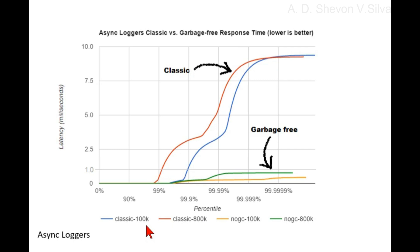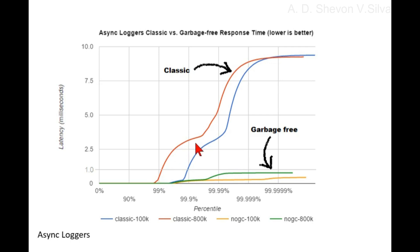In the graph, 100k means logging at a sustained load of 100,000 messages per second. 800k is a sustained load of 800,000 messages per second. In classic mode, we see numerous minor garbage collections which pause the application for about three milliseconds. This quickly causes response time delays of almost 10 milliseconds. As you can see in the graph, the increase of load shifts the curve to the left — there are more spikes.